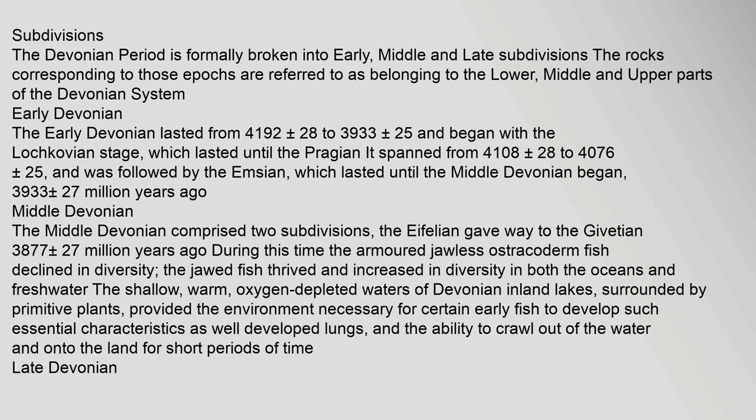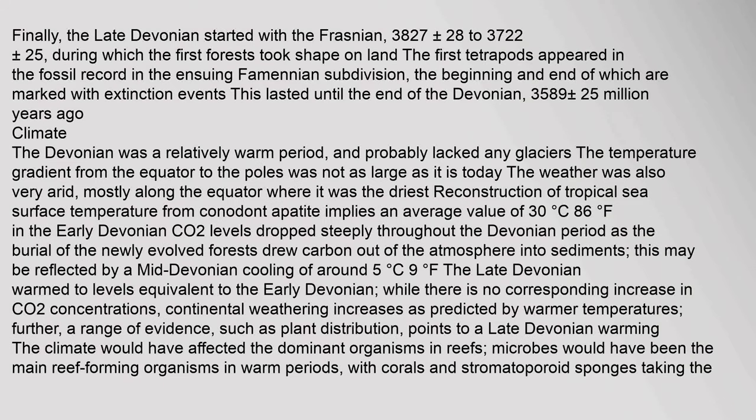The Devonian period is formally broken into early, middle, and late subdivisions. The rocks corresponding to those epochs are referred to as belonging to the lower, middle, and upper parts of the Devonian system. The early Devonian lasted from 419.2 Maya, and the late Devonian started with the Frasnian at 382.7 Maya.